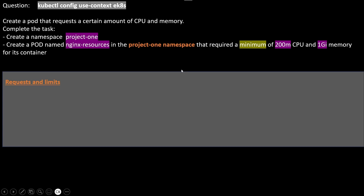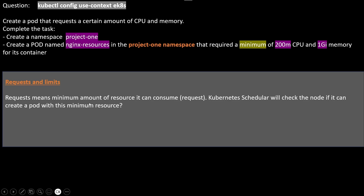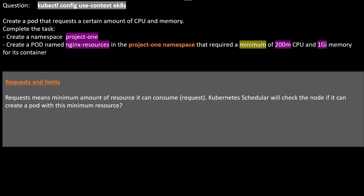When talking about resources, we should know request and limit. Request means the minimum amount of resources a pod can consume. The Kubernetes scheduler will check the node to see if it can create a pod with this minimum resource requirement. For example, if we are going to create a pod allocating 5GB RAM, the scheduler will check on which node it can create this pod.